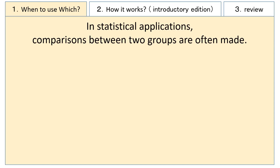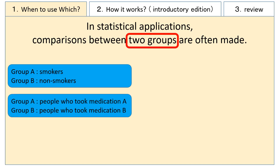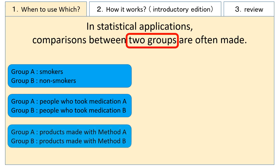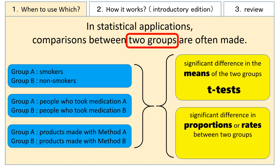In statistical analysis, a common scenario is to compare two groups. For example, analyzing the differences in health conditions between smokers and non-smokers, comparing the blood pressure of people who took drug A with those who took drug B, or comparing the quality of products produced using method A and method B. When we want to determine whether there is a difference in the means between the two groups, we use a t-test. On the other hand, when we want to determine whether there is a difference in proportions or rates between the two groups, we use a chi-square test.